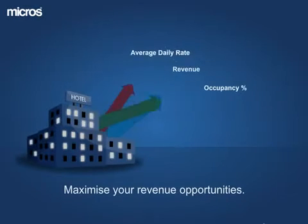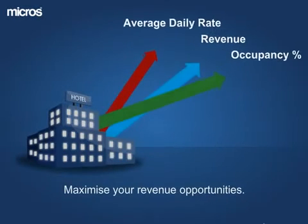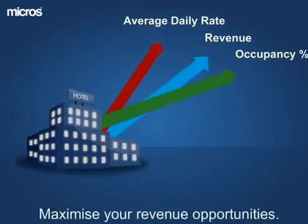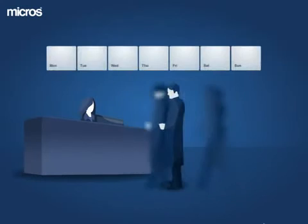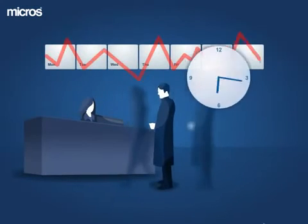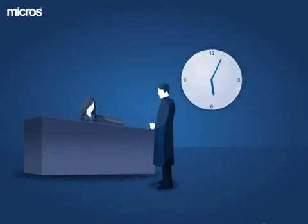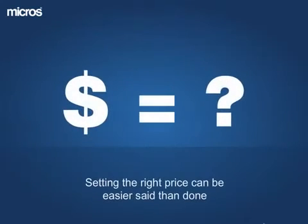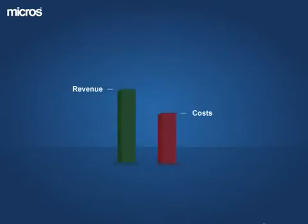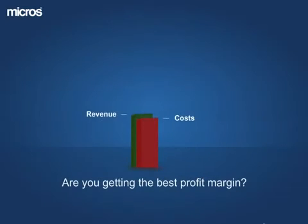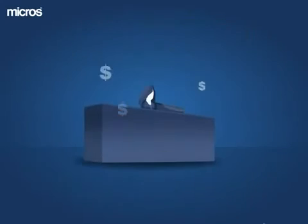Every business wants to maximise their revenue opportunities. But in the hospitality industry, where demand can fluctuate significantly from day to day, or even minute to minute, determining and setting the right price can be easier said than done. So how can you ensure you're getting the best profit margin, or REVPAR, out of your available inventory, without missing out on valuable business?